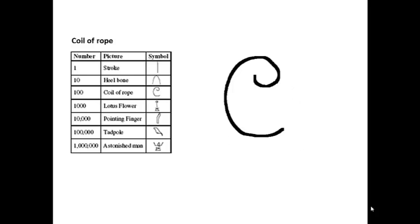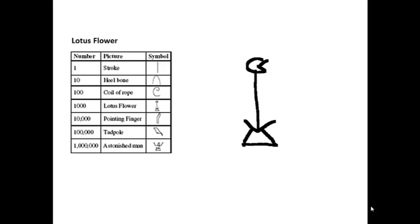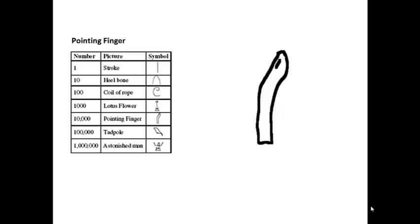The third symbol is the coil of rope, which is a hundred. These symbols were handwritten or engraved and there will be variations — for instance, you'll see the coil of rope pointing one way and sometimes the other. The fourth symbol is the lotus flower, which is a thousand. The fifth symbol is a pointing finger, ten thousand.